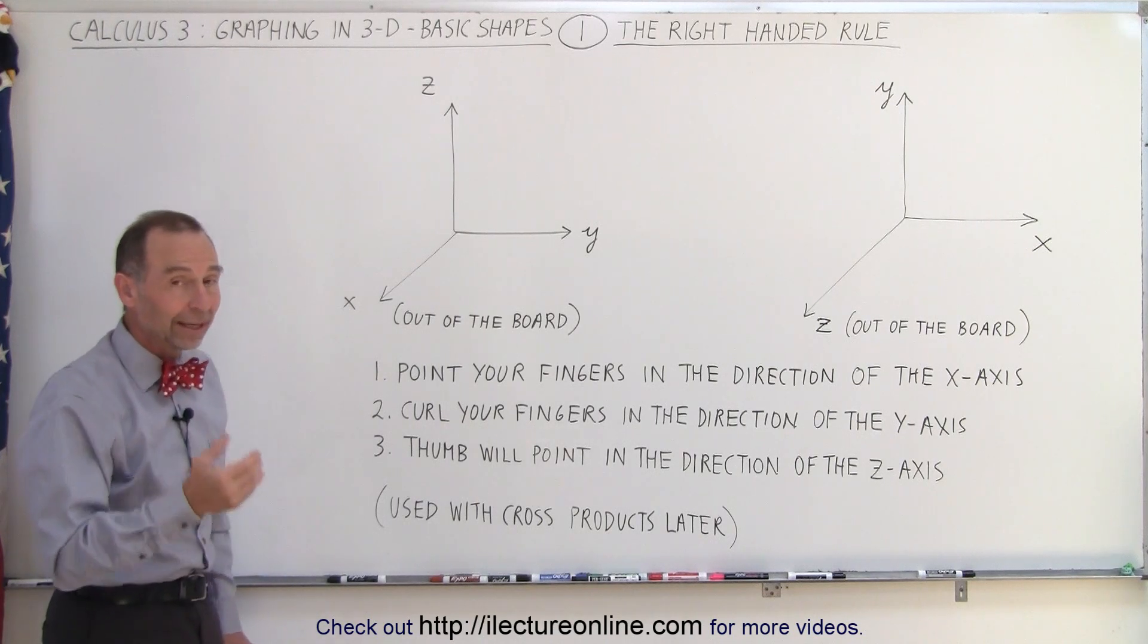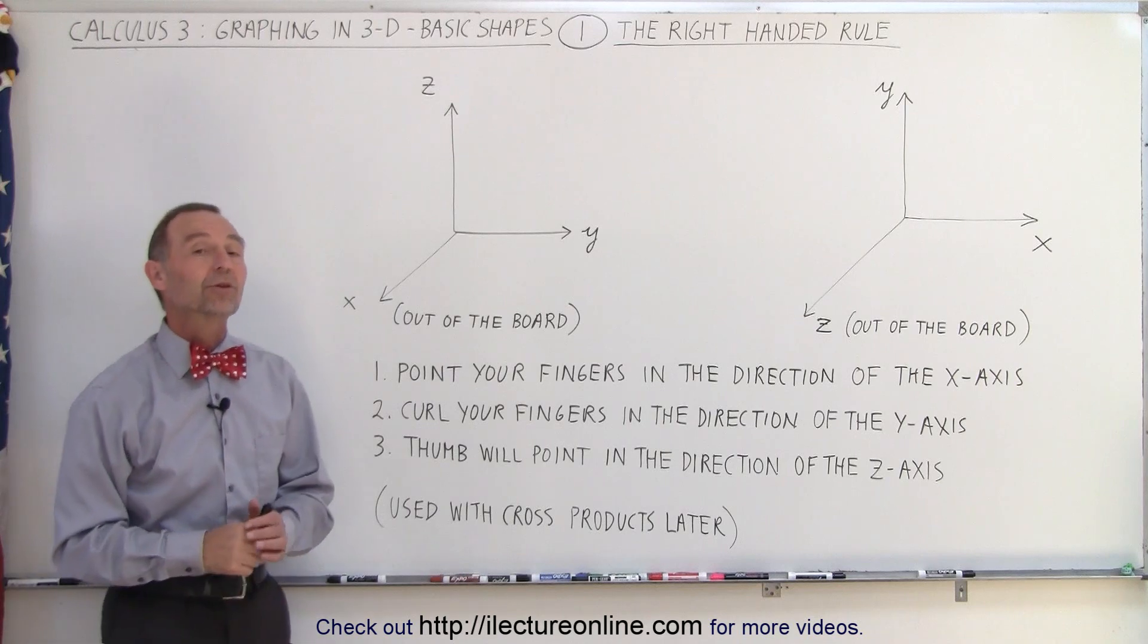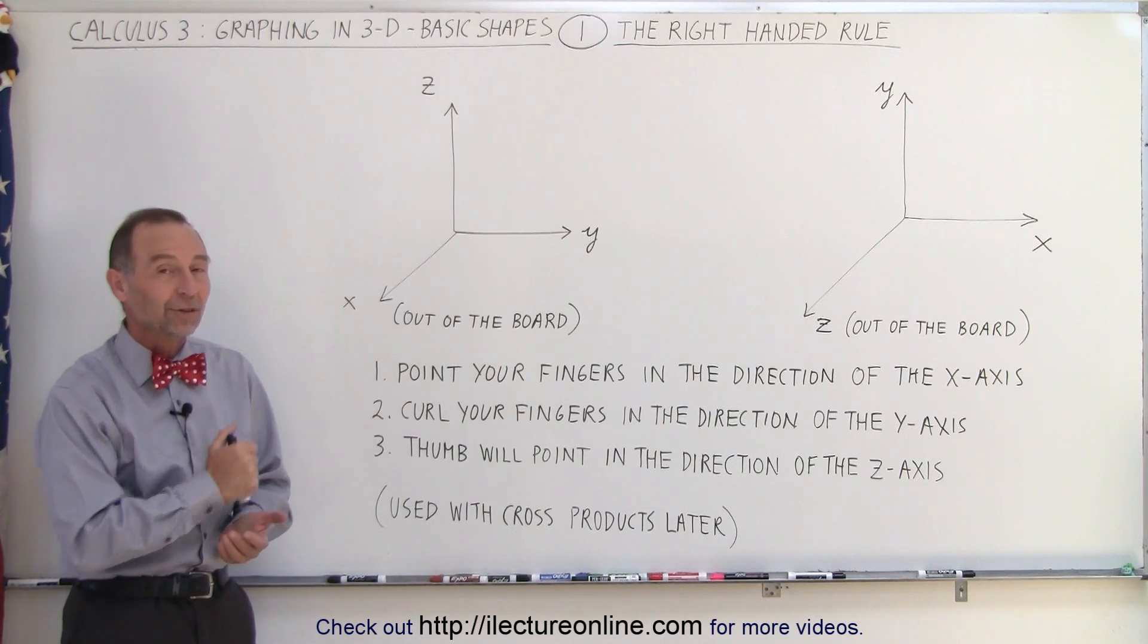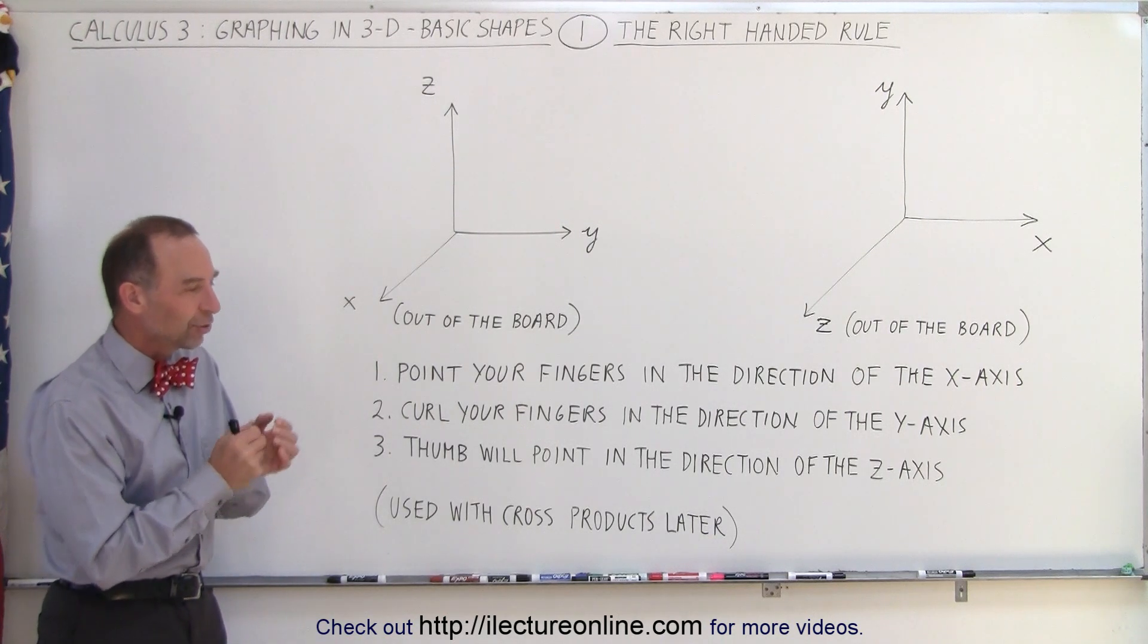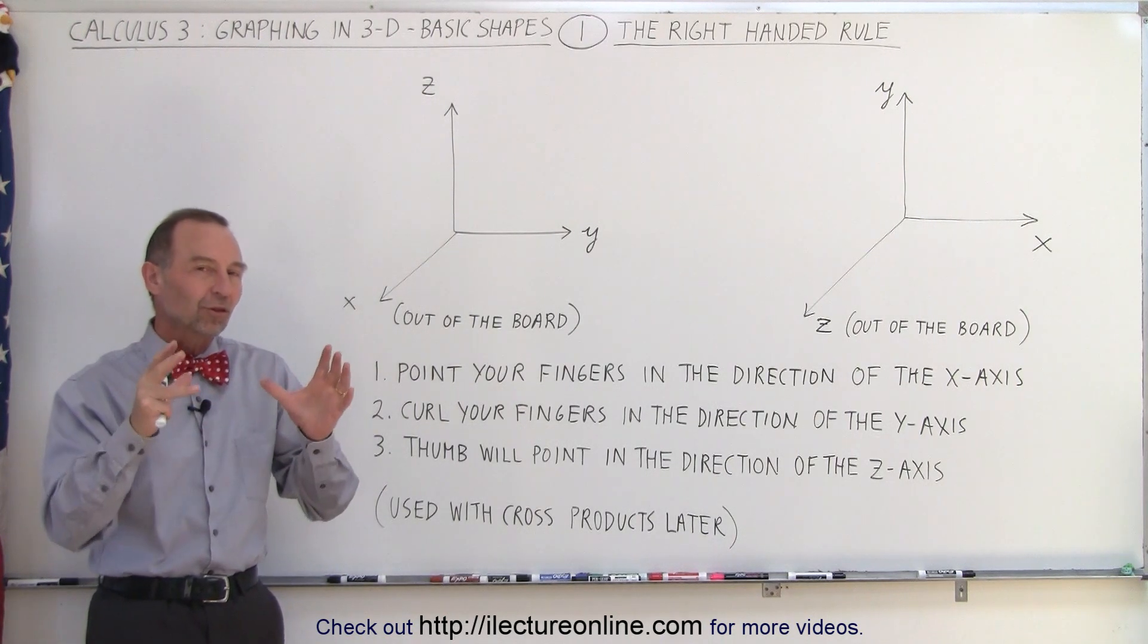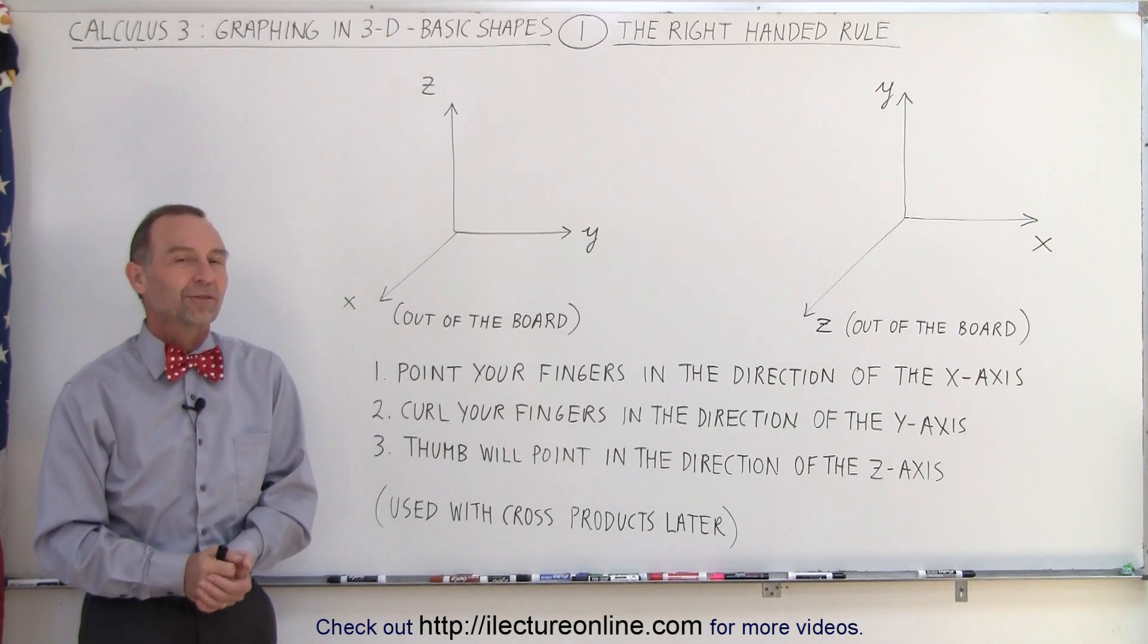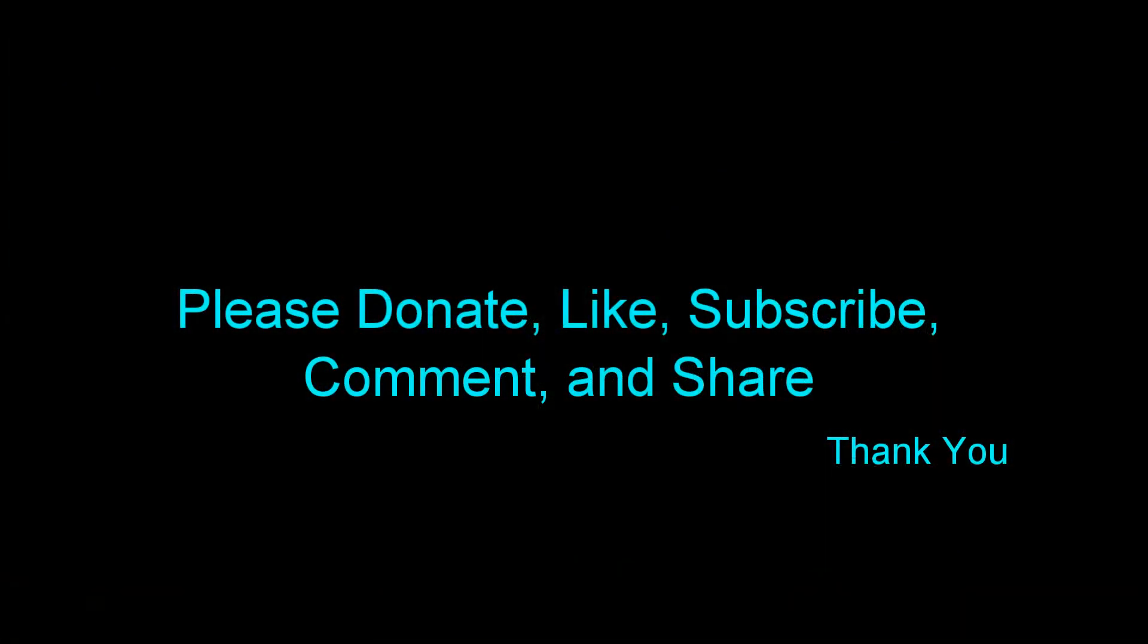And using that right-hand rule will come in very handy when we're dealing with cross-products of vectors later in three-dimensional space. So there's our start. And we'll have all kinds of other good nuggets, so to speak, good pieces of understanding in three-dimensional space before we move on to using vectors in three-dimensional space. That's how it's done. Thank you.